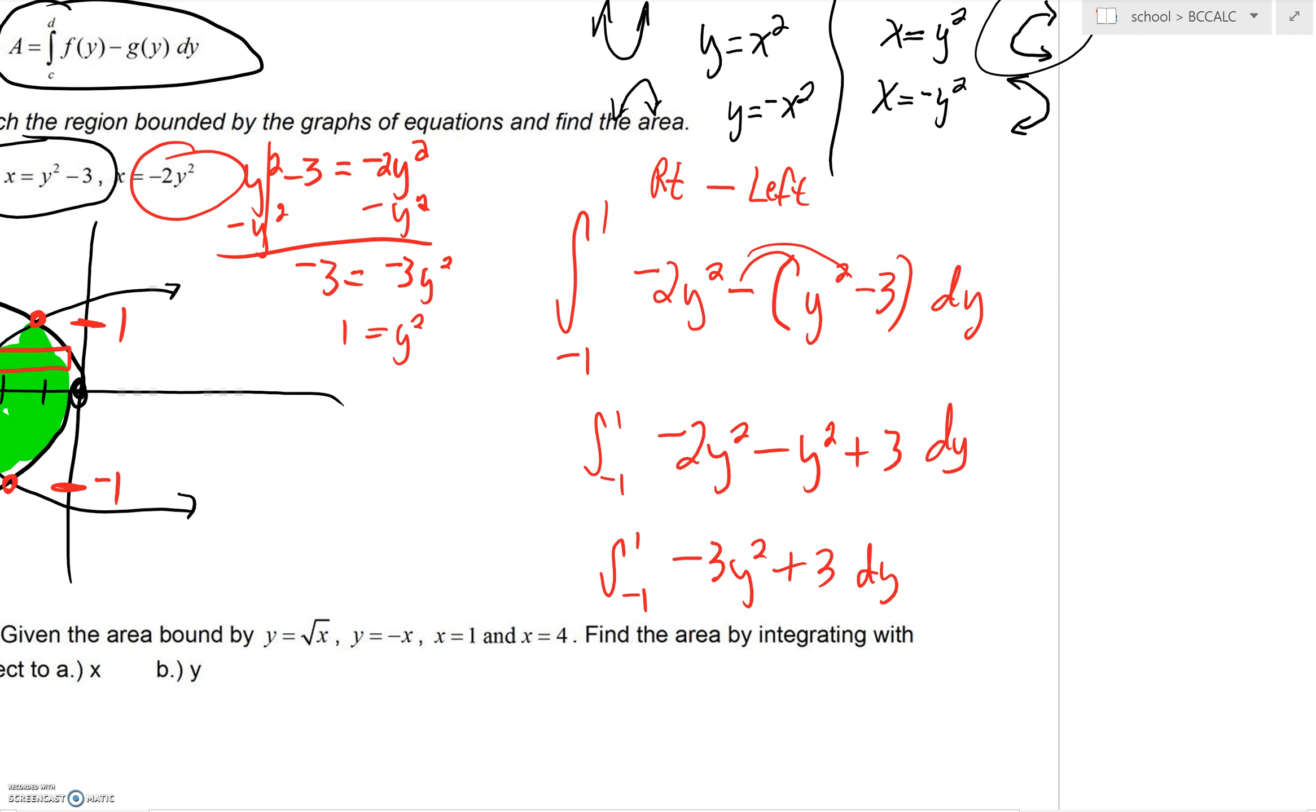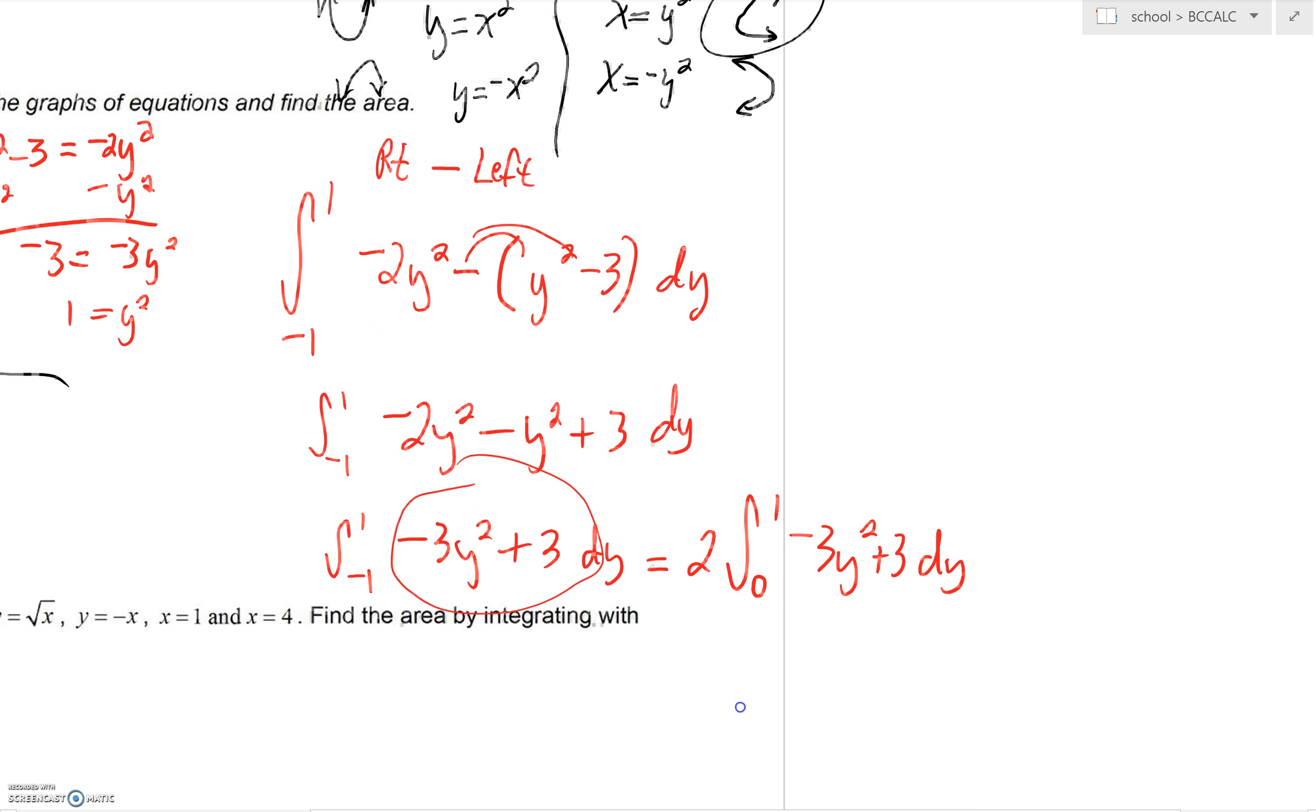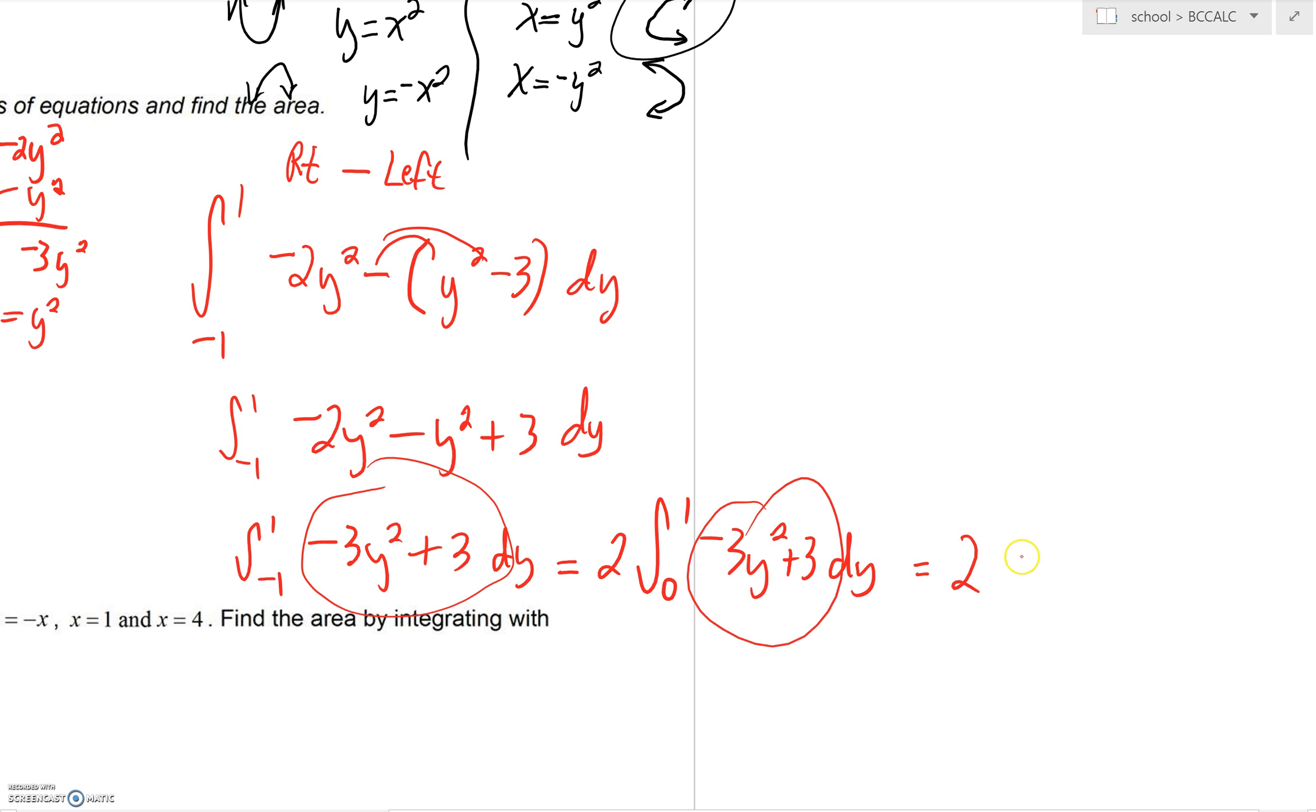A wonderful thing you could do to evaluate this is to realize that this is an even integrand. If you were to let y be replaced by negative y, you'd get exactly the same thing. So we had a property from last chapter where we can go ahead and more quickly work this out. This definitely can be worked out very fast. Let's do an anti-derivative. Bump that up to a 3 and divide, you'd get negative y to the third plus 3y. And now we're just going to evaluate that between 1 and 0.